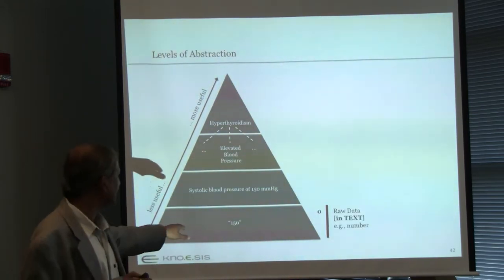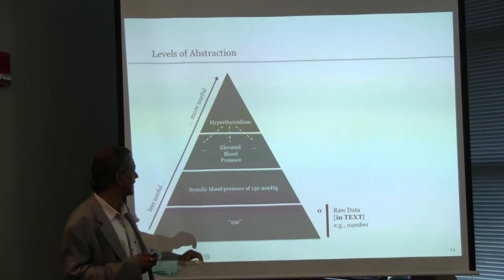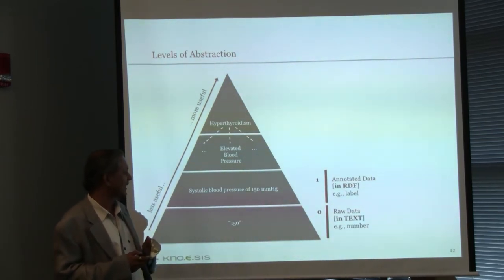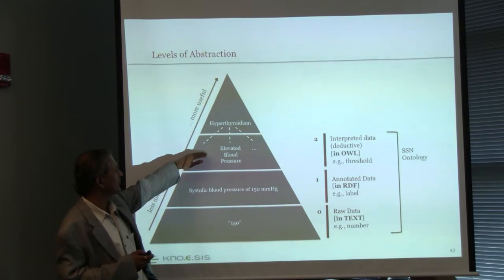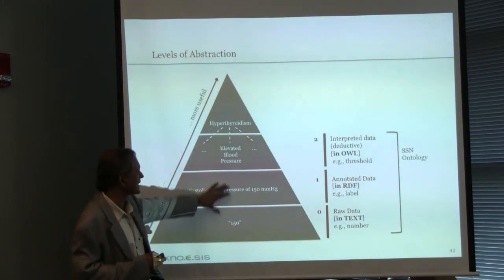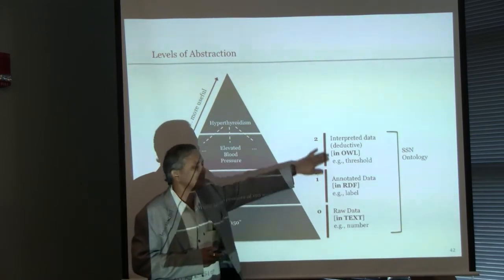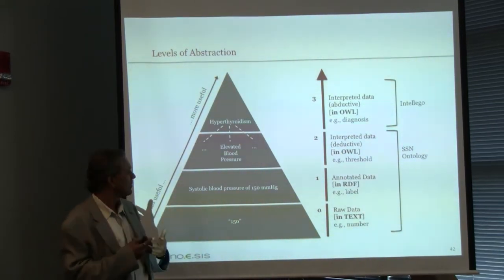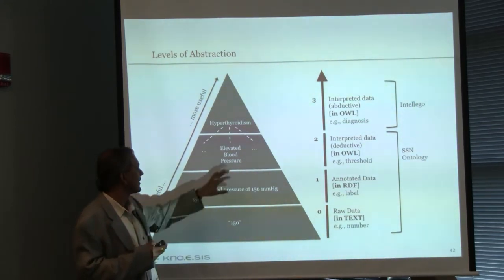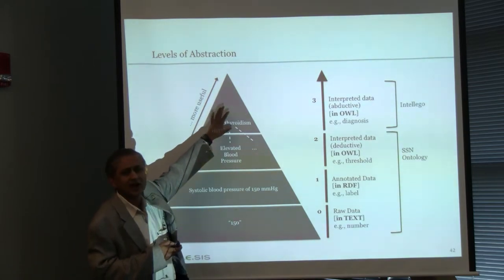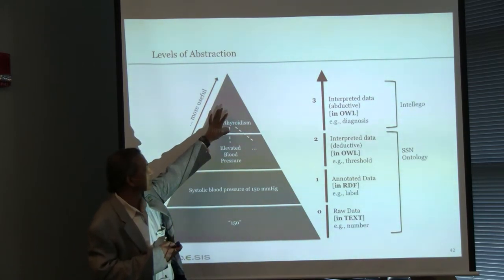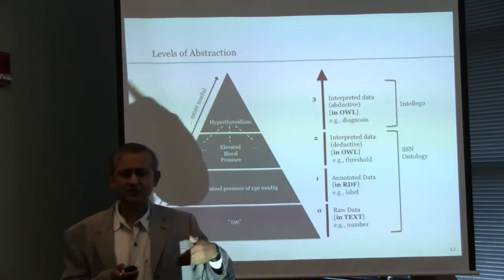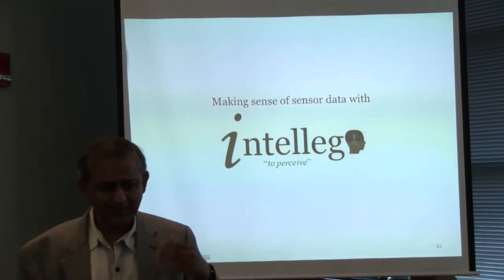For example, a raw reading of 150 is converted into labeled data — systolic blood pressure at that level — to interpreted data, which is elevated blood pressure. These things can all be described in the SSN ontology and using semantic web standards into something that is interpreted and actionable. Doctors would not decide on medication based solely on elevated blood pressure; they would decide based on the identification of the disease and disease-related conditions and parameters. For that, we have developed a core computational framework we call Intelligo — which stands for making sense out of sensor data.